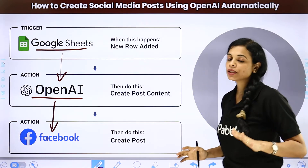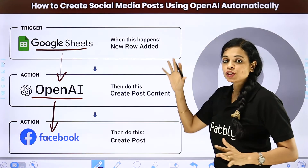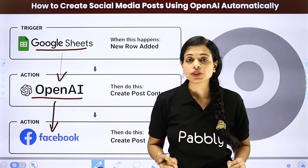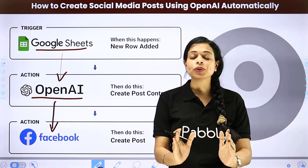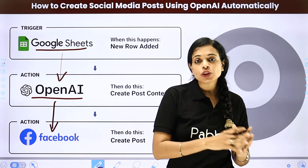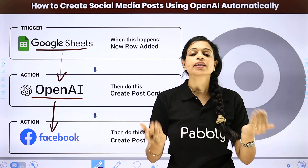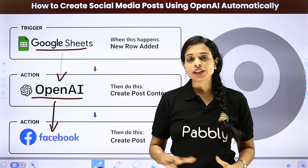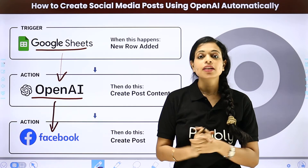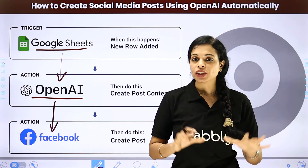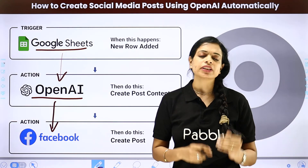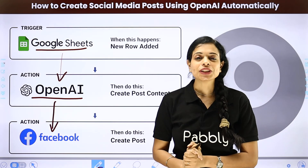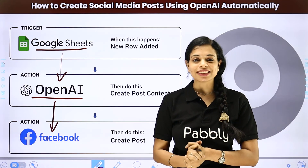These are some of the things you can do to market your business with the help of social media automation. This is going to save a lot of time for you. All you have to do is think about what you want to automate, then connect with us and we are going to help you. All these integrations we have seen here are given in the video description, so you can go check out these workflows yourself. If you get stuck anywhere, we are happy to help. Please write to us. I'll see you soon with more such automations — take care of yourself.